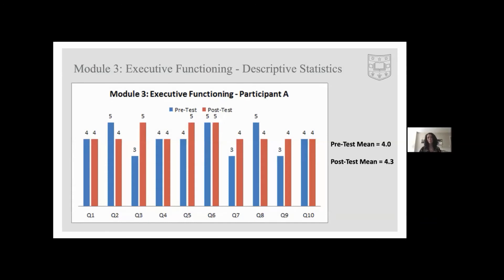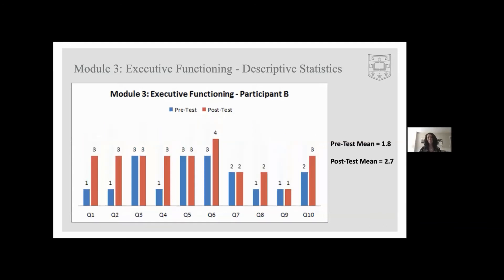For module three, executive functioning, participant A demonstrated the greatest improvement for the question about breaking down larger tasks into subtasks and timelines. Participant B demonstrated the greatest improvement for questions about identifying priorities and sticking to them, focusing on the most important tasks when there's a lot to do, and completing prioritized tasks by the end of the day. Out of all three modules, participant B's lowest mean pre-test and post-test scores were from this module, but this participant demonstrated the greatest improvement on average from this module when comparing pre- and post-test differences.